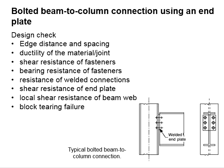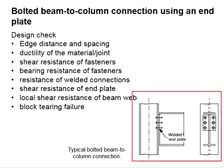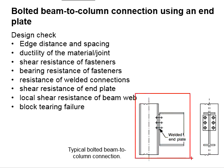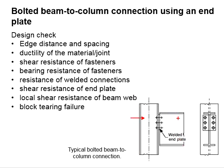This slide outlines the design check for a typical bolted beam-to-column connection using an end plate. The configuration of the connection is illustrated in the figures here. There are three main components in the connection: the column, the beam, and an end plate in between the beam and column.